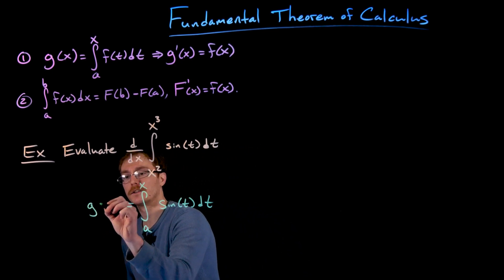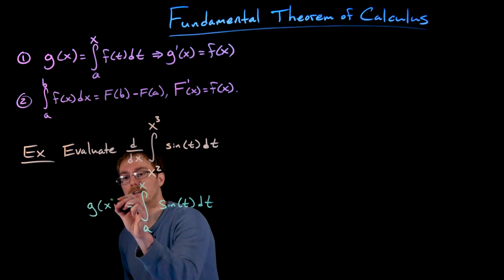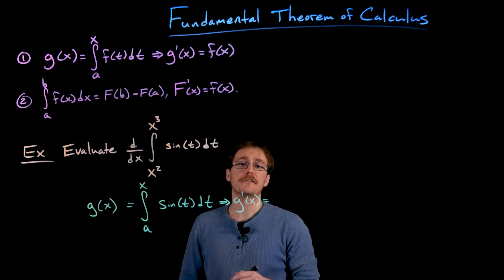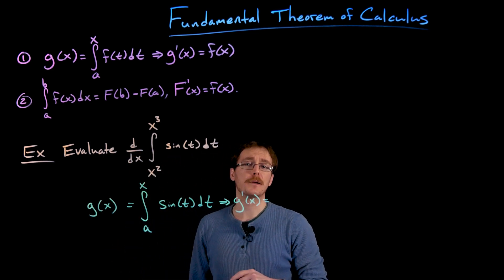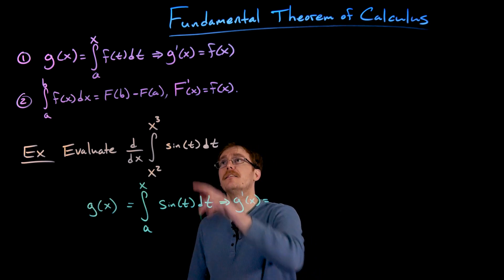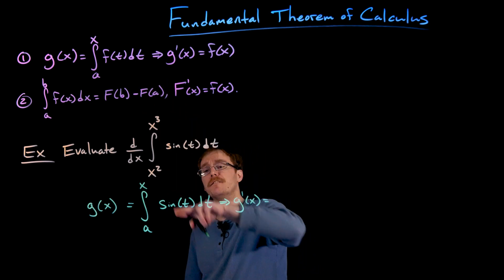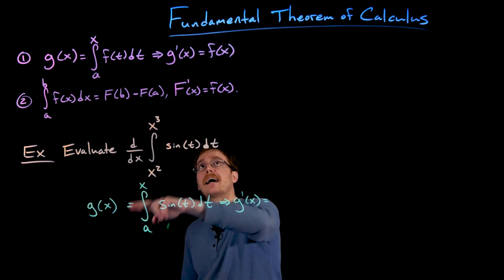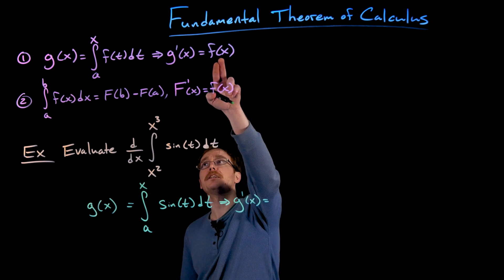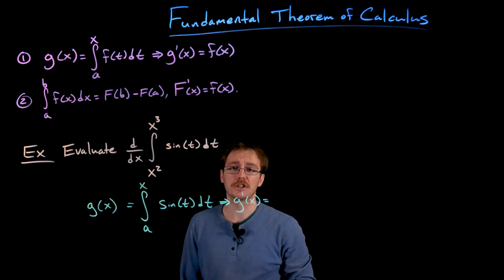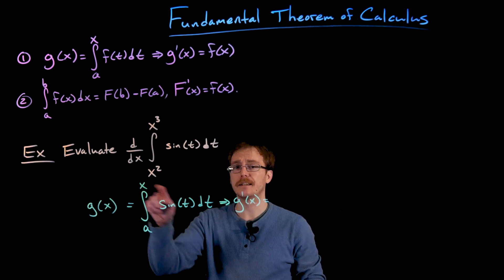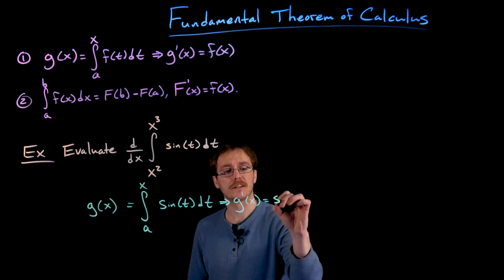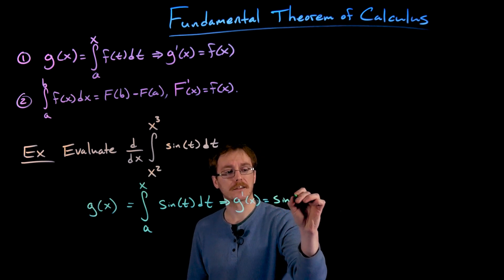Let's go ahead and call this function g of x, at least for now. The first part of the fundamental theorem of calculus would tell us that the derivative of this integral function — that is g prime of x — would just be equal to the integrand function evaluated at that variable x, so that would give us sine of x.